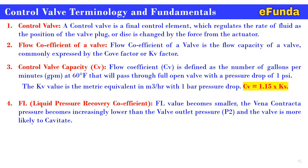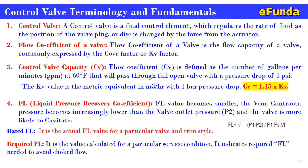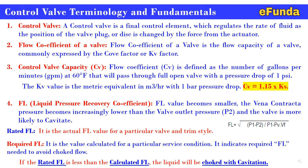Fourth: FL — liquid pressure recovery coefficient. As the FL value becomes smaller, the vena contracta pressure becomes increasingly lower than the valve outlet pressure P2, and the valve is more likely to cavitate. FL equals the square root of differential pressure (P1 minus P2) divided by (P1 minus Pv) into VF. The rated FL is the actual FL for a particular valve and trim style; the calculated FL indicates the required FL needed to avoid choked flow. If the rated FL is less than the calculated FL, the liquid will be choked with cavitation.